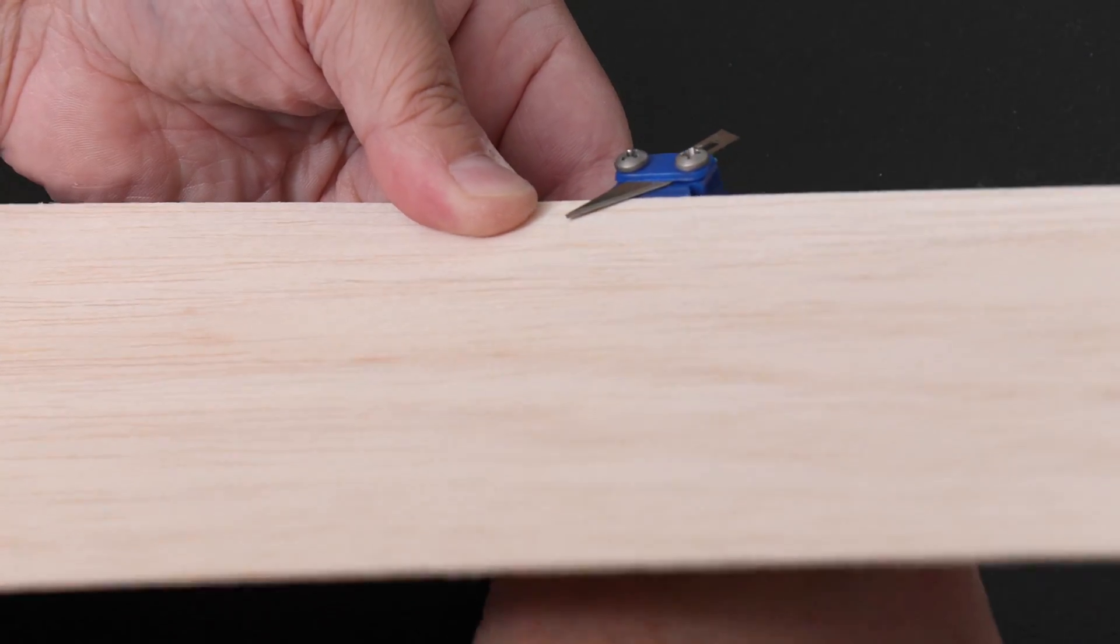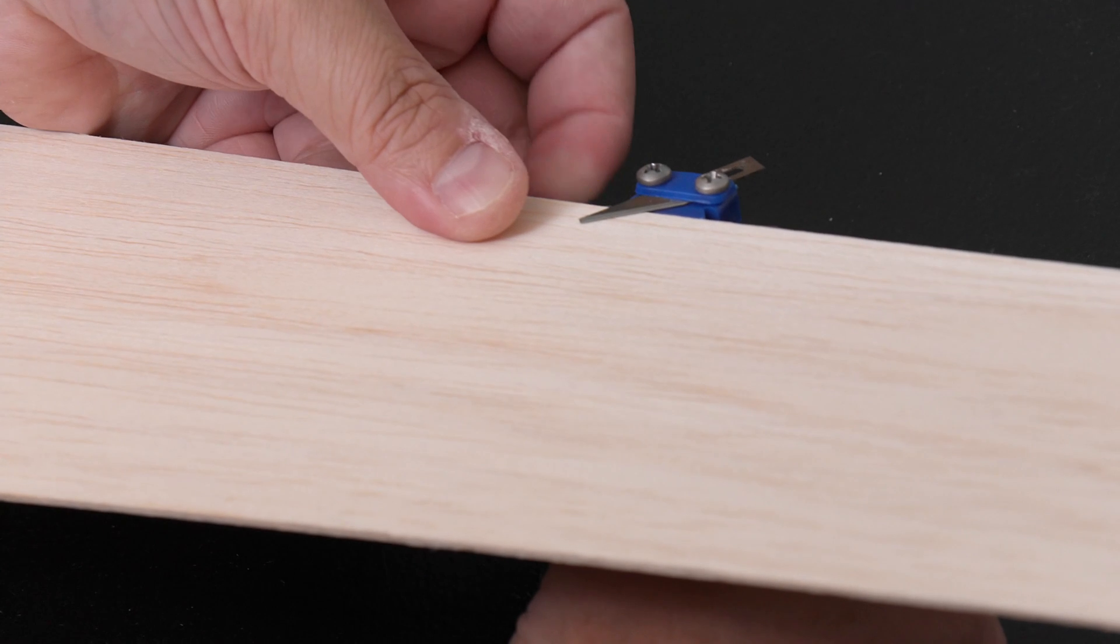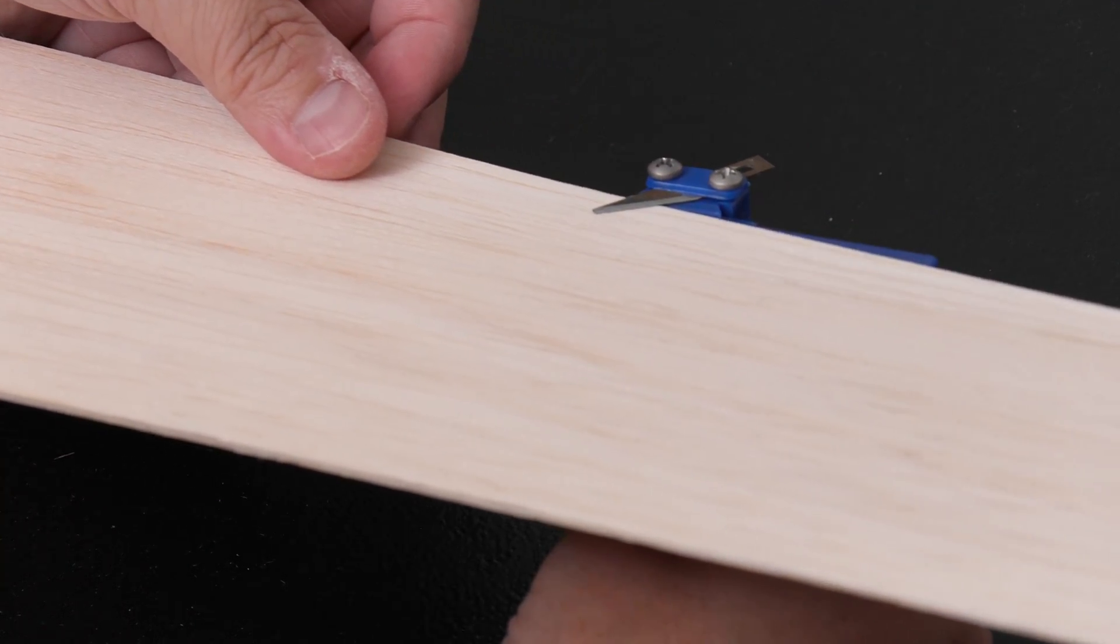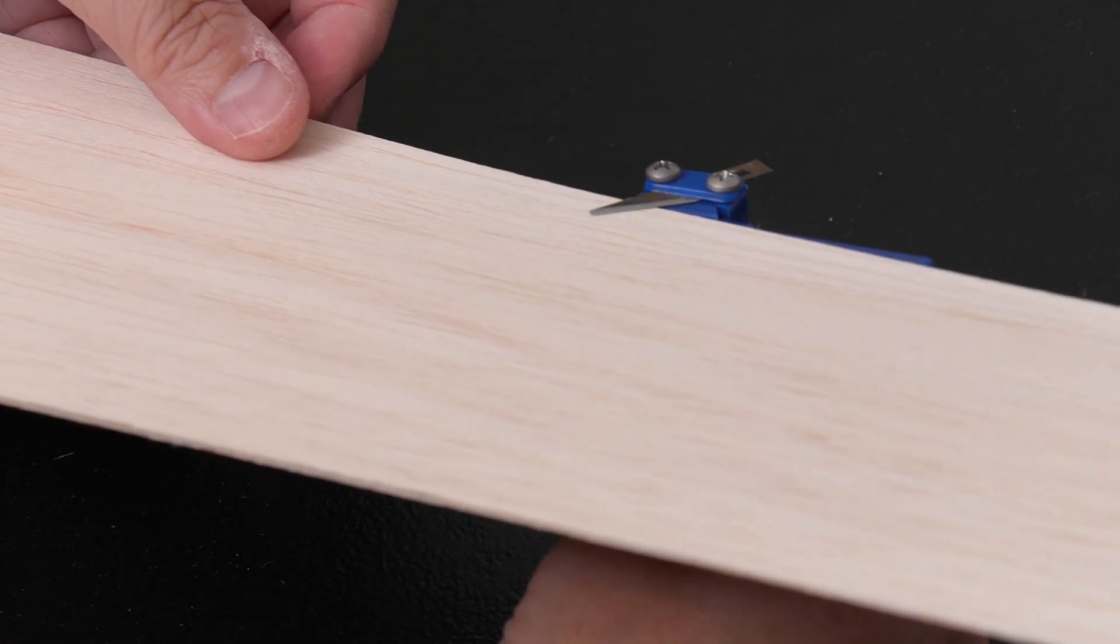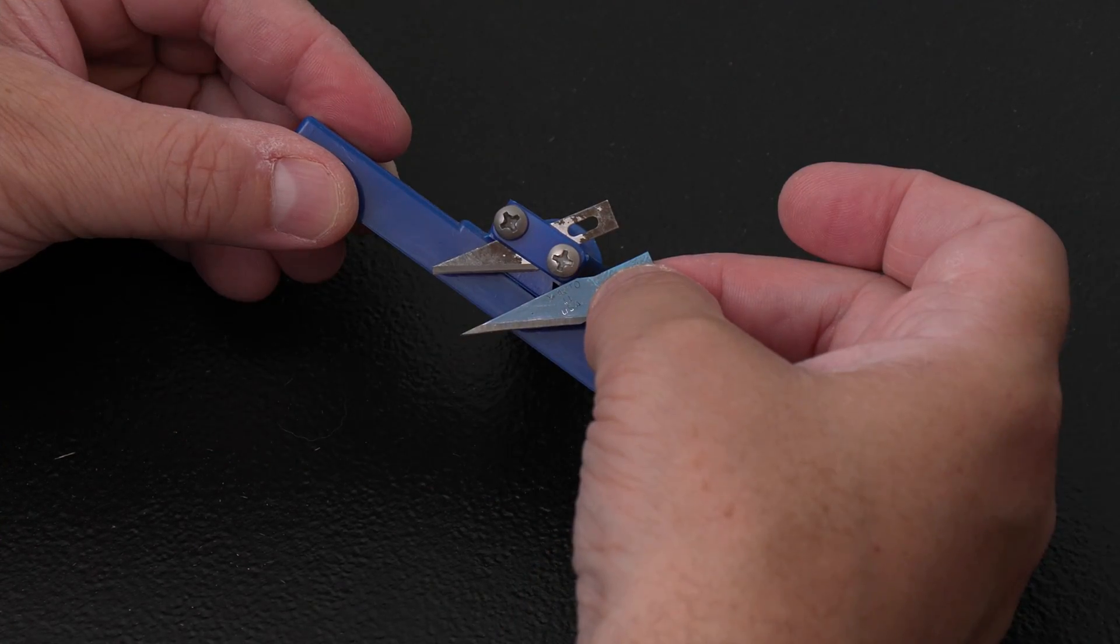For example, if you wanted to make square sticks out of 1/16th inch thick balsa, you can just put the sheet in the gap and turn it until it's snug.